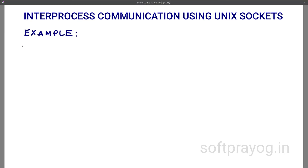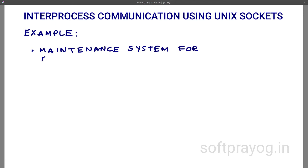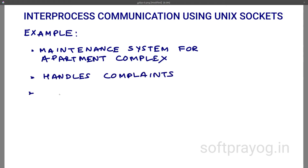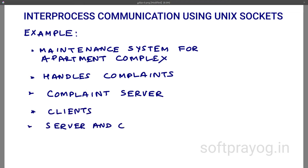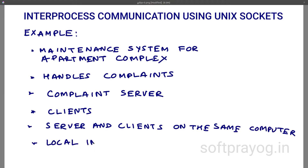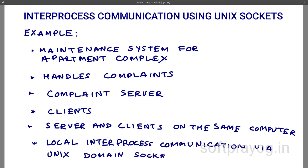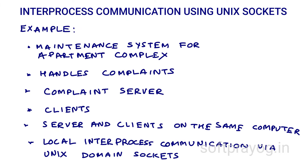As an example, let's look at a maintenance system for an apartment complex. It handles complaints like an electric switch not working, water leakage in the kitchen, or an electric socket not working. The system has a complaint server which keeps track of all maintenance complaints. Clients can log a complaint, ask for an existing complaint for repair work, or mark a complaint as completed, upon which the server deletes it. The complaint server and clients run on the same computer and communicate via UNIX domain sockets.